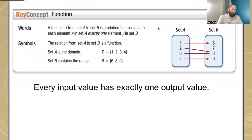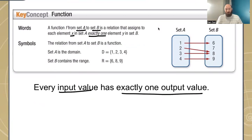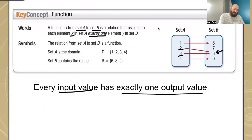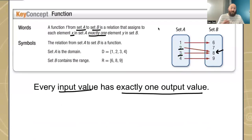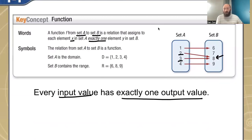A function f from set A to set B is a relation that assigns to each element x in set A exactly one element y in set B. What this means is that every input value has exactly one output value. Even though, for example, both two and three are going to the same output value of eight, that's fine — each input is only going to one output. What would make it not a function is if one input went to both six and seven. We're looking for every input having exactly one output.